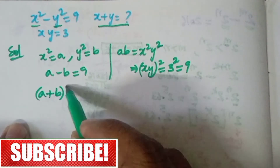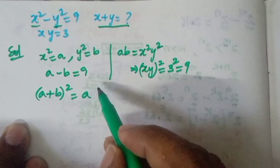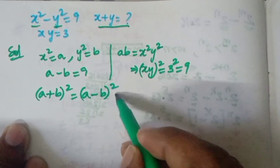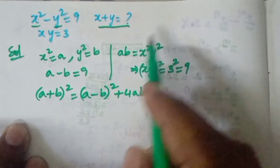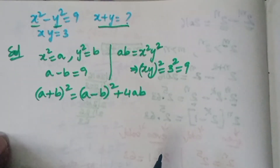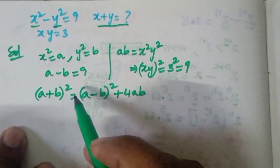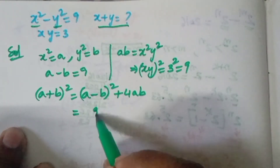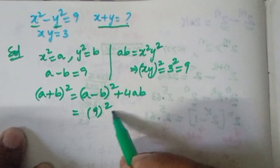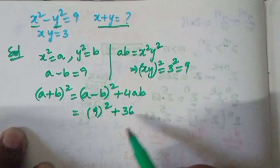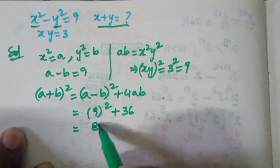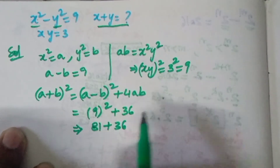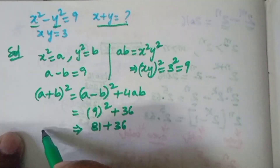Now we use the identity: a plus b whole square is equal to a minus b whole square plus 4ab. Our target is x plus y. So a plus b whole square equals a minus b whole square, which means 9 squared, plus 4ab which is 4 times 9, giving us 81 plus 36.